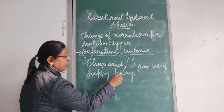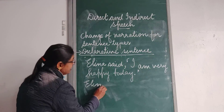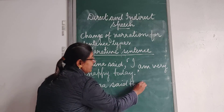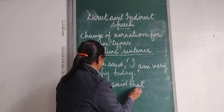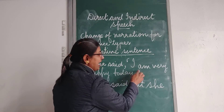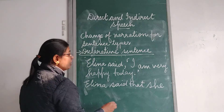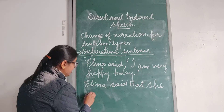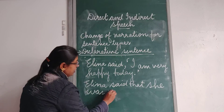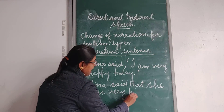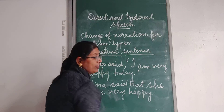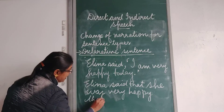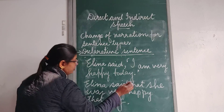What will be its indirect form? 'Alina said that' — instead of a comma, we use the conjunction 'that'. 'I' will be changed to 'she' according to the subject. 'Am' — present tense will be changed to past tense — so 'she was very happy'. 'Today' will be changed to 'that day', as the adverbials are getting changed. Full stop.